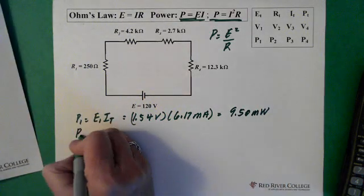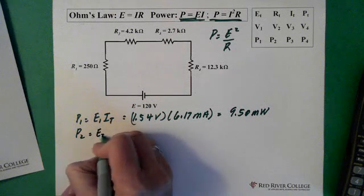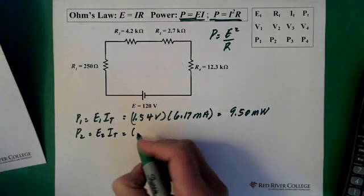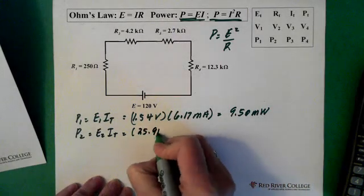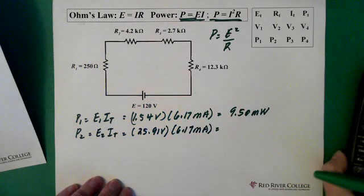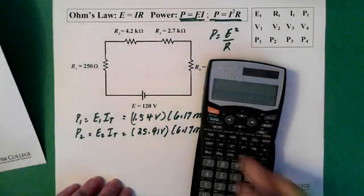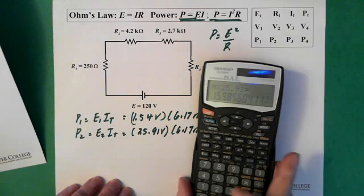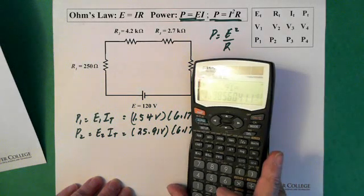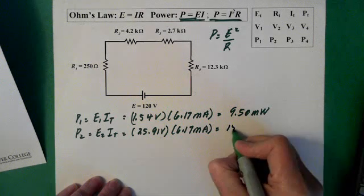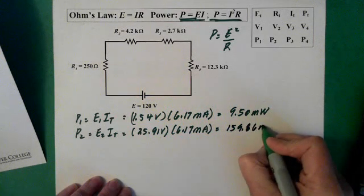And power 2. Voltage 2 times the total current. Second voltage is 25.91 volts, multiplied by the current. Recall the current, multiplied by 25.91 equals 159.86. So 159.86 milliwatts.